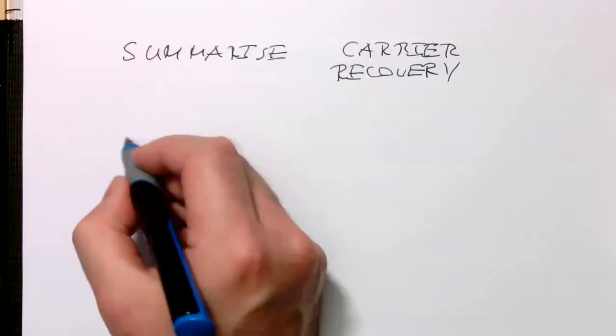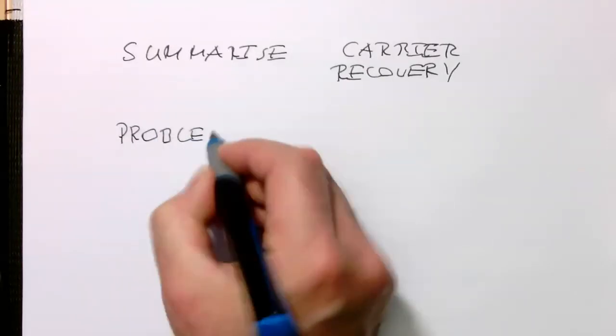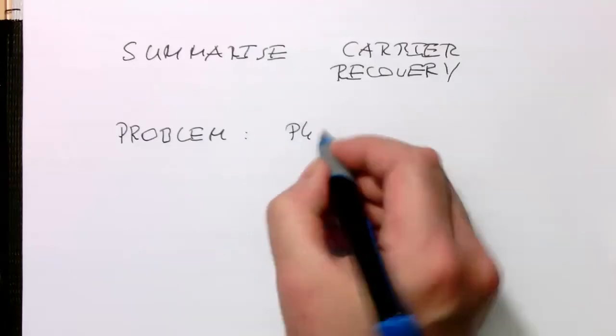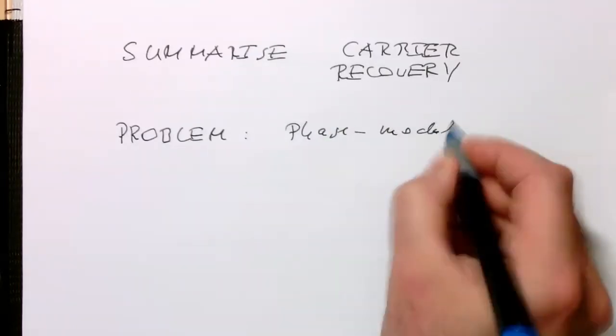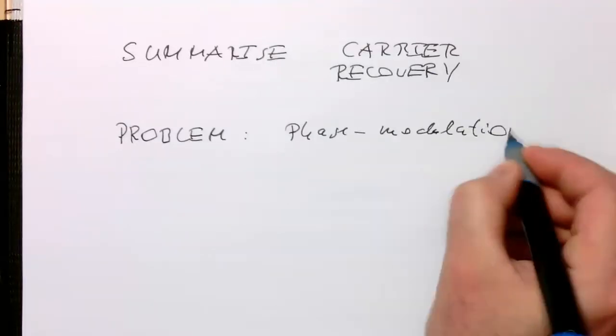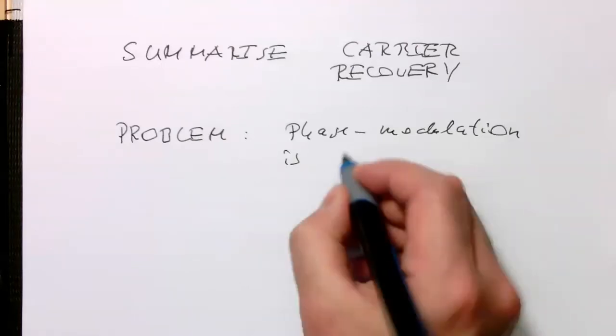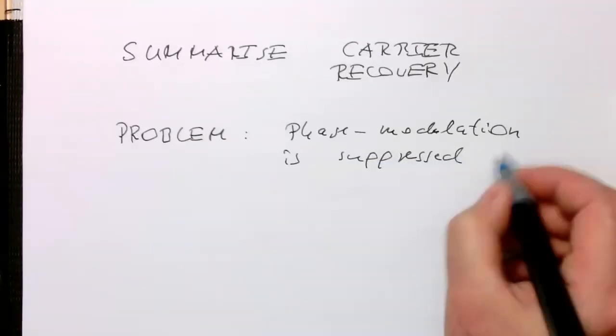Let's summarize carrier recovery. The problem is that phase modulation is essentially a suppressed carrier AM, suppressed carrier amplitude modulation, and with that, we don't have any carrier we can lock a PLL on.